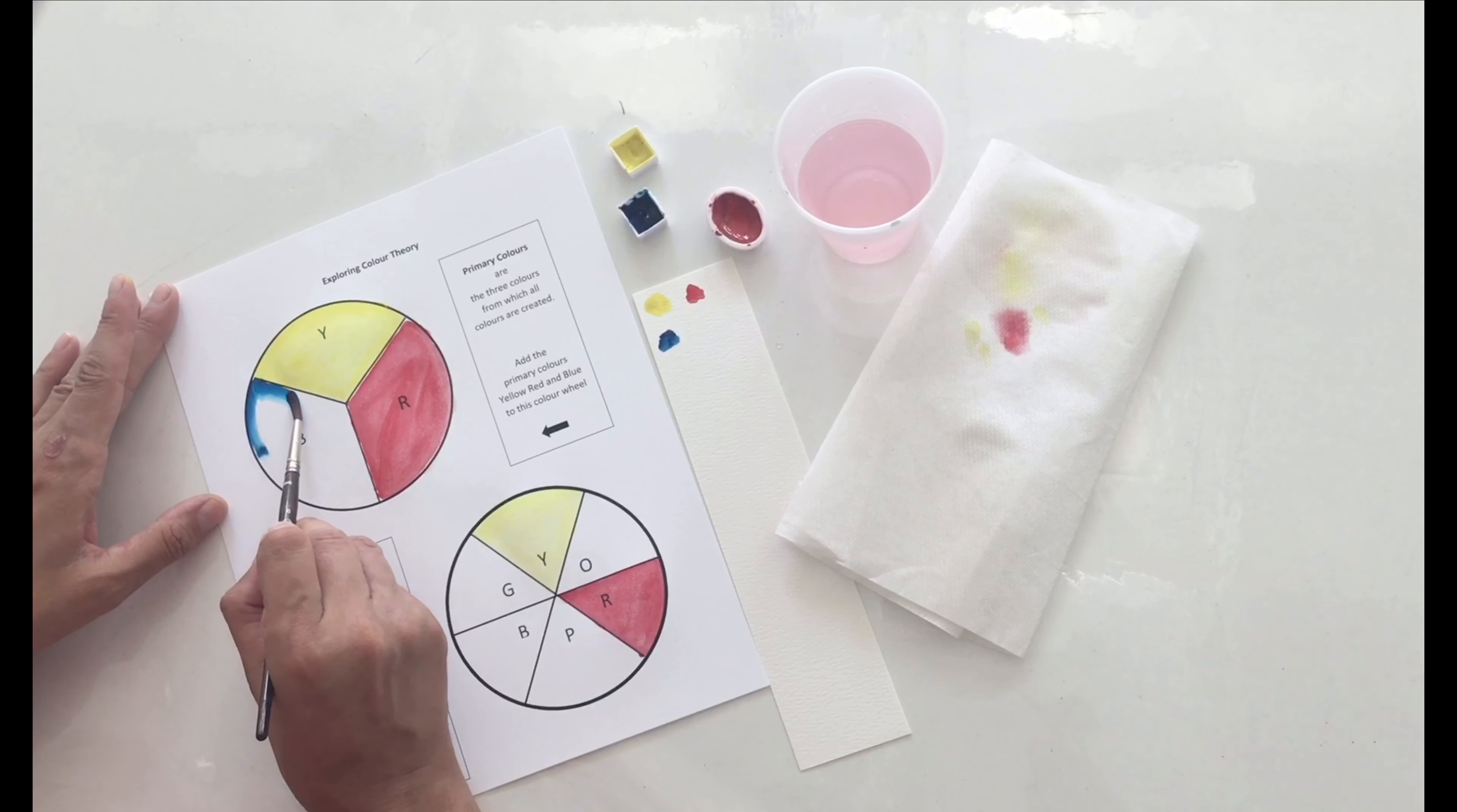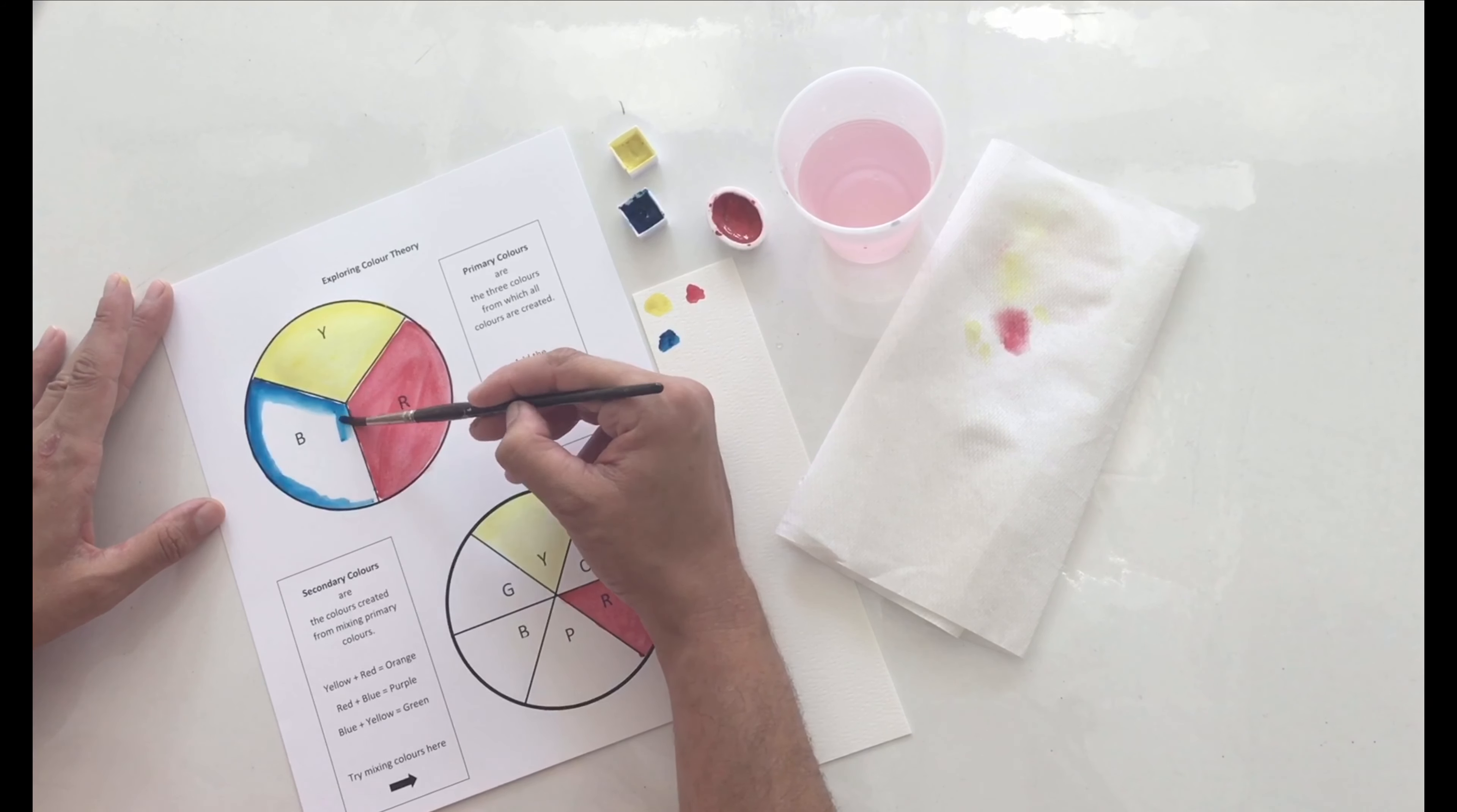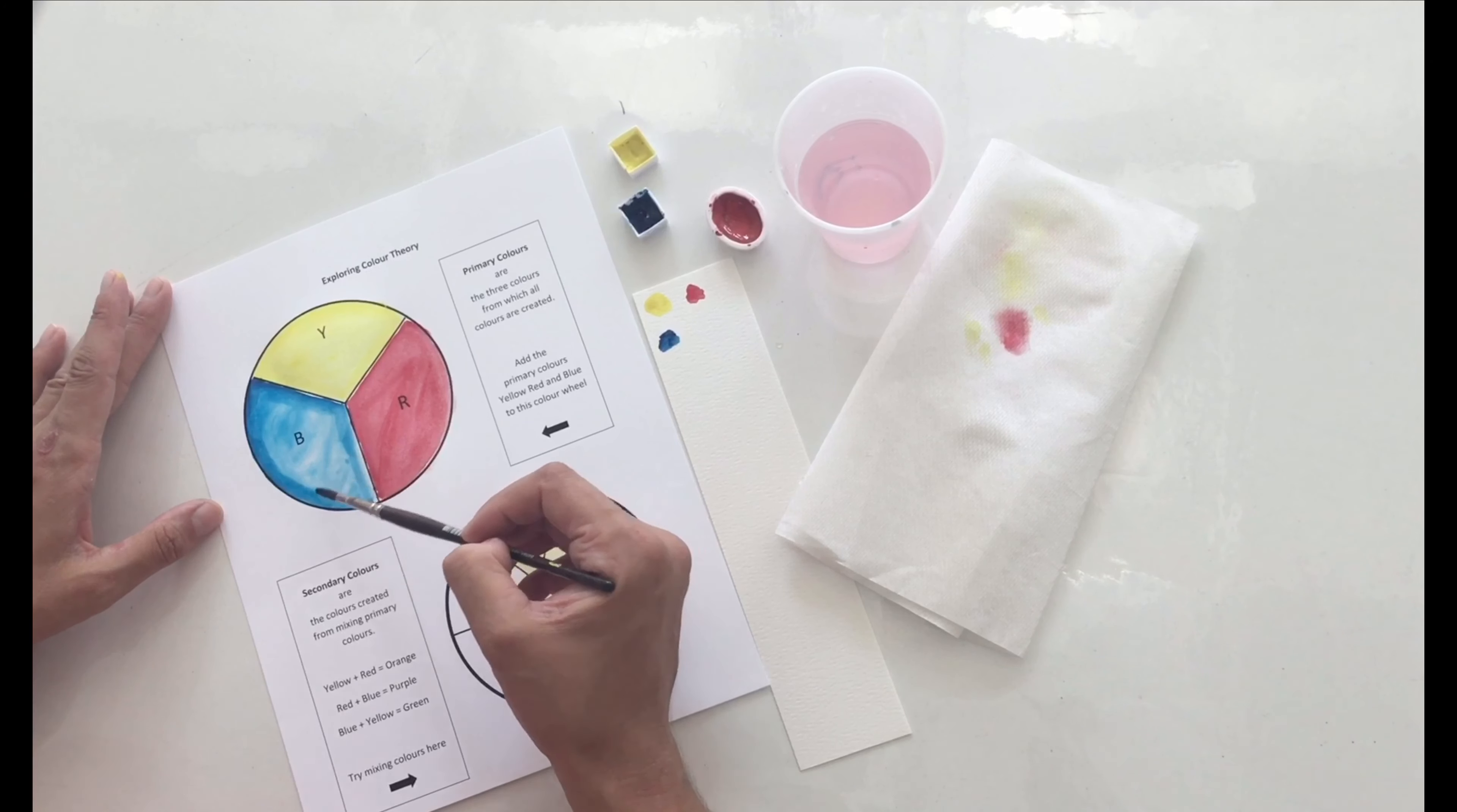Some other things that you can be thinking about while you're filling in these color wheels is what you would do with these colors. Maybe they give you a certain feeling, maybe they make you happy, maybe they make you feel peaceful. Maybe you're thinking about a scene that you could paint. Maybe that blue reminds you of the sky on a sunny day, or maybe it makes you think of being at the beach.